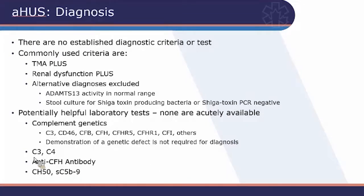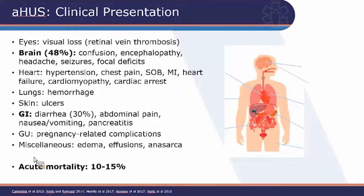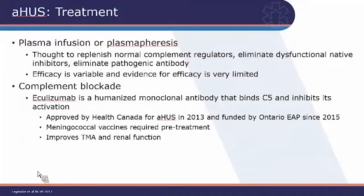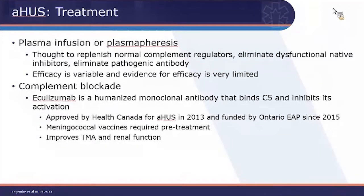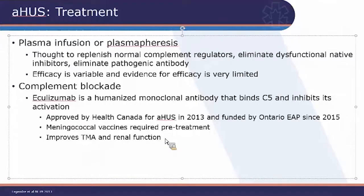In AHUS, brain and GI tract are by far the most commonly involved systems. Treatment options include plasma infusion — to give back the complement regulator you lack — or plasma exchange, which removes the bad effector that cannot be turned off and replaces it with one that can. Unfortunately, the evidence for these interventions is weak and variable depending on what mutation you have. Fortunately, we have eculizumab — a humanized monoclonal antibody that prevents deposition of complement effectors, so tissue damage does not occur even if complement binds.